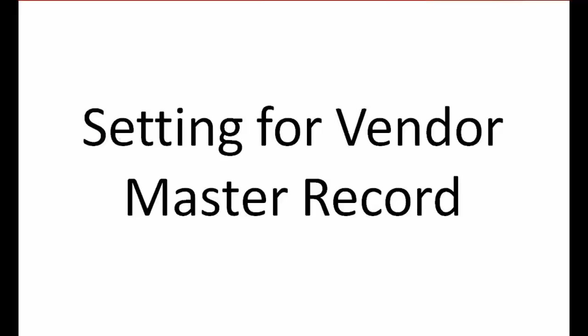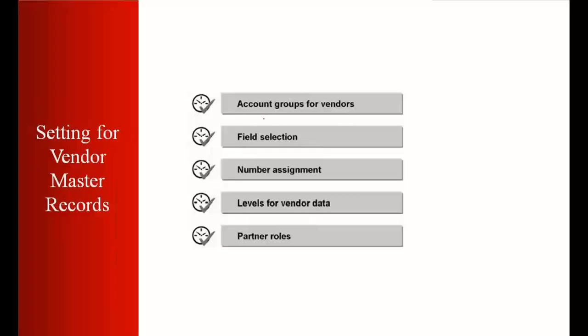Now, when we talk about Vendor Master record customizing, we can divide all the available customizing into five different parts. The first part is account group — how we customize it and what are the settings and functions behind it. Then we will see field selection, number assignment for the Vendor Master record, the level for Vendor Master record, and finally partner roles and their determination.